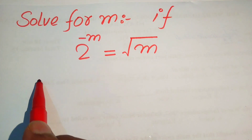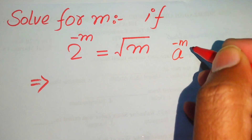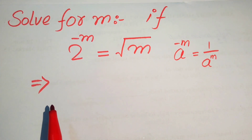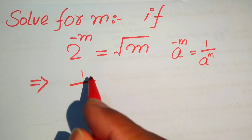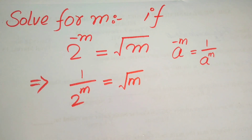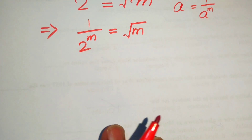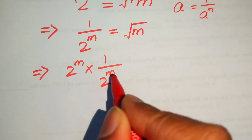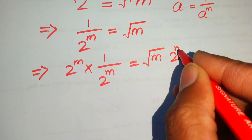The very first step uses the exponential law: if we have a to the power of minus m, we write it as 1 over a to the power of plus m. Moving a term to the denominator makes its exponent positive. So we write 1 over 2 to the power of m equals square root of m. After this step we move 2 to the power of m to the right hand side by multiplying both sides by 2 to the power of m.